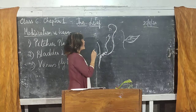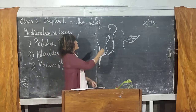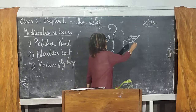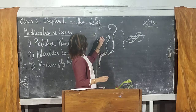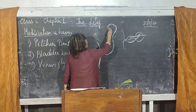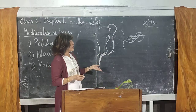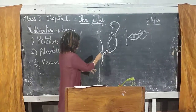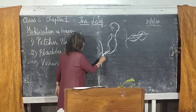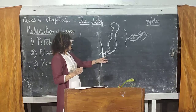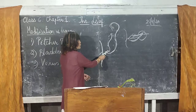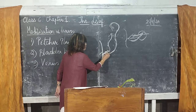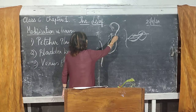Each leaf has a petiole — the stalk which attaches the leaf to the stem. In the case of the pitcher plant, the petiole is modified into a tendril, a coiled thread-like structure whose function is to provide support to the leaf. So the leaf stalk is modified into a tendril to give support, and the leaf apex is modified into a lid.